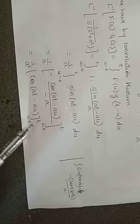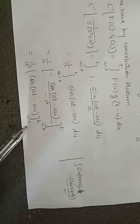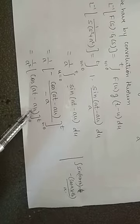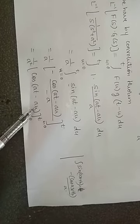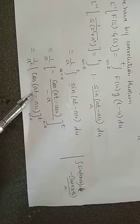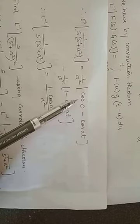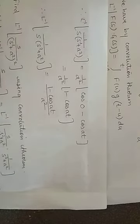Substituting the limits: upper limit u = t gives cos(at − at) = cos(0); lower limit u = 0 gives cos(at). So the result is (1/a²)·[cos(0) − cos(at)] = (1/a²)·[1 − cos(at)]. Therefore, L⁻¹ of 1/(s(s² + a²)) = (1 − cos(at))/a². Thank you.